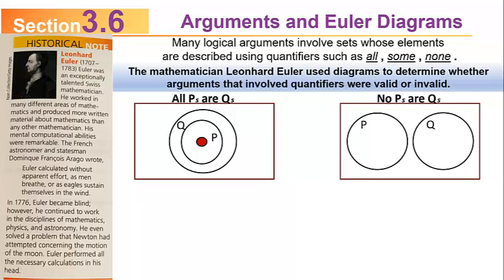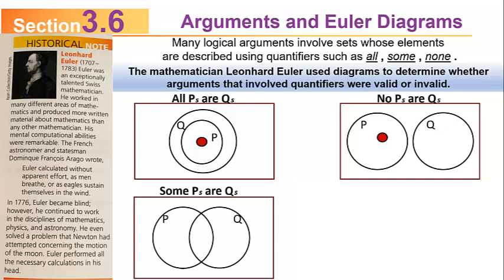Here's another: 'No P's are Q's.' This time, you want the P circle and the Q circle to be separated completely so that no P can possibly be in Q. For 'Some P's are Q's,' this is a pair of overlapping circles. The circle P and the circle Q overlap, indicating there's a possibility that some P's could be Q's, while also allowing the possibility that some P's might not be Q's.